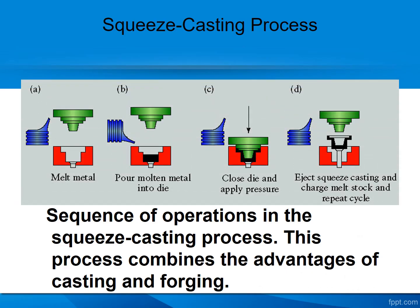Squeeze casting is a process that combines casting and forging. In forging, we apply heavy external pressure. Here, we pour the molten metal and simultaneously apply a load under a closed-die condition. After the load is applied, the product is ejected using an ejector pin to get the final product.